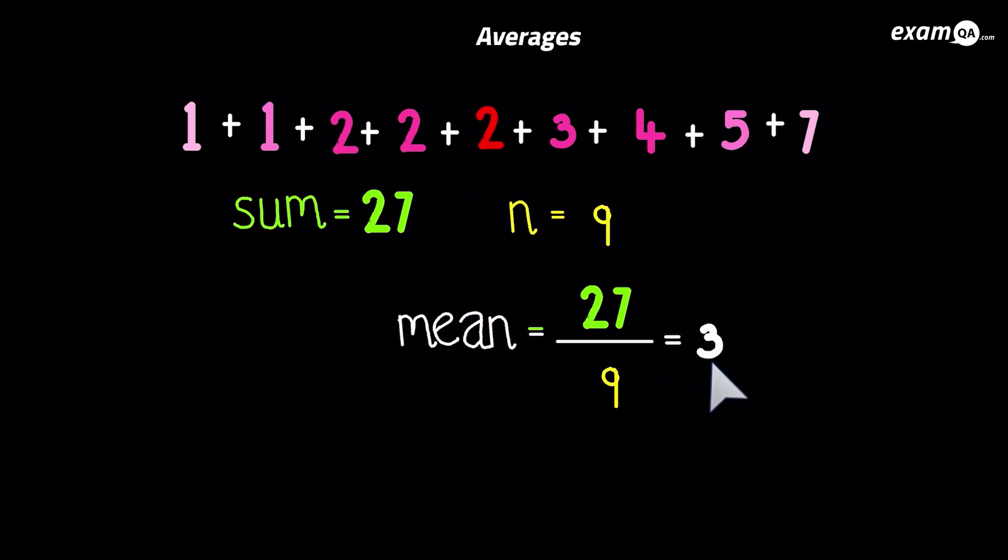So with this set of numbers, we've got the mode as 2. We've got the median as 2. However, we've got the mean as 3. But all three of them tell you the average. But they're not necessarily going to be the same.